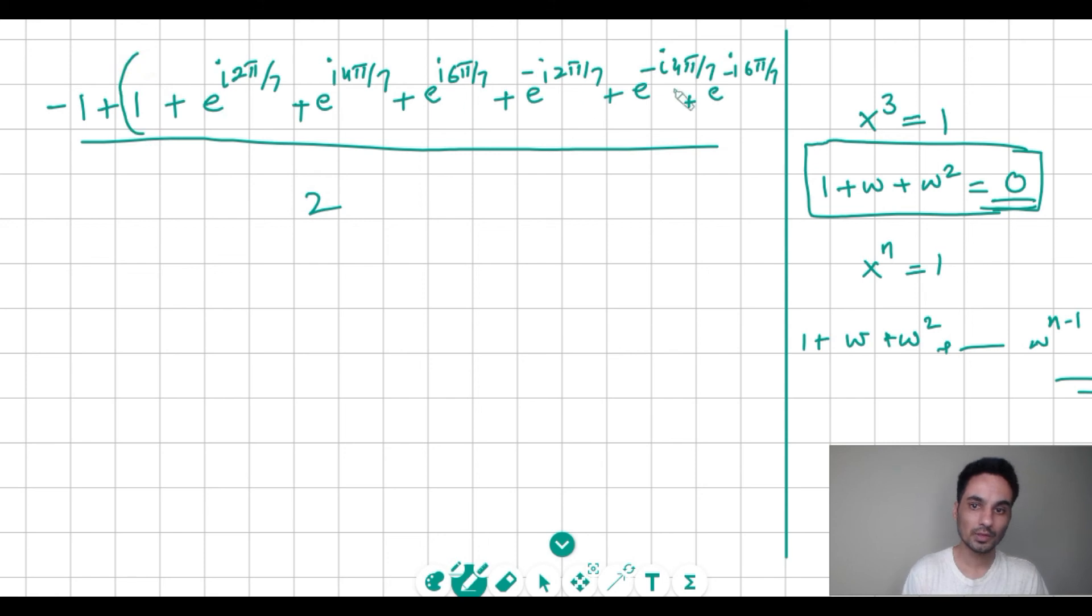So this last part here gives me the sum of roots of which equation? x⁷ = 1. And sum of roots according to this formula is 0.